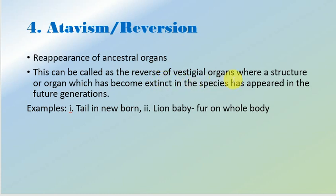Atavism is the reverse of vestigial organs — a structure or organ which has become extinct in a species reappears in future generations. Examples include a tail in newborns in rare cases, and certain babies born with fur over the whole body. These were the four categories of anatomical and morphological evidences. In the next video, we will study paleontological evidences. Thank you.